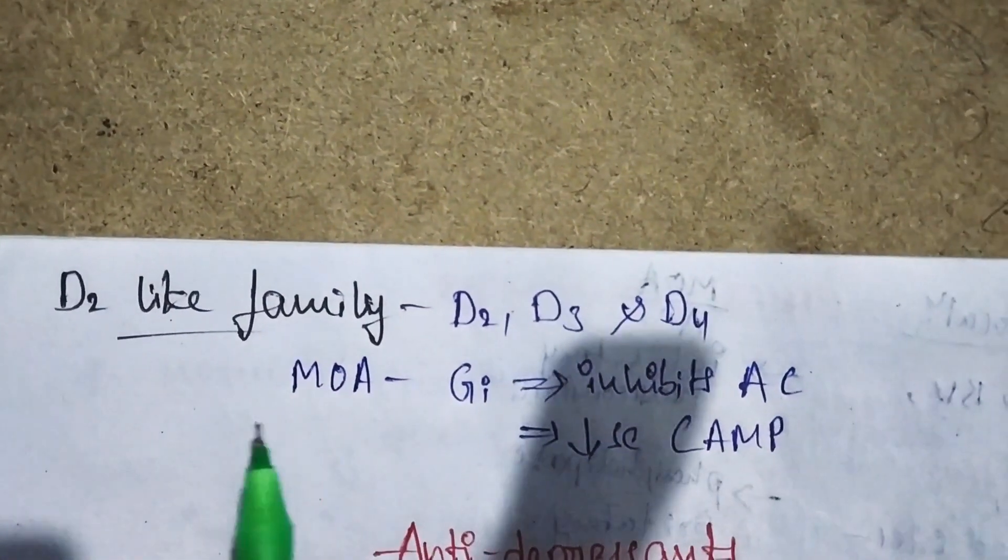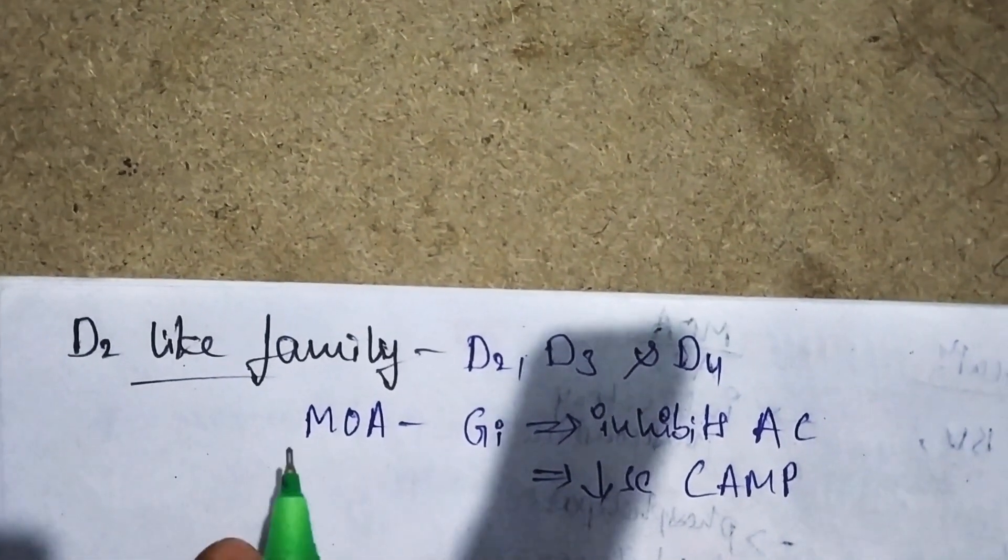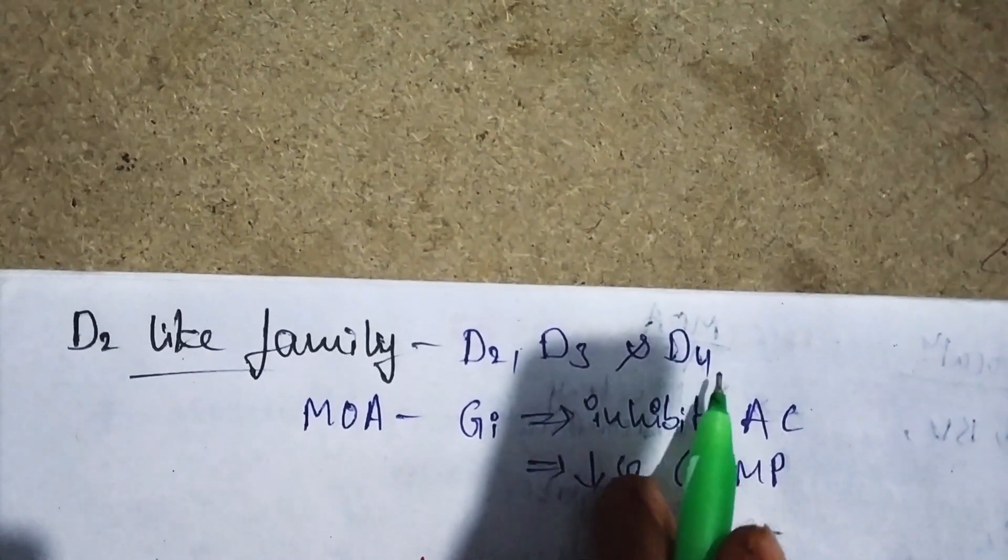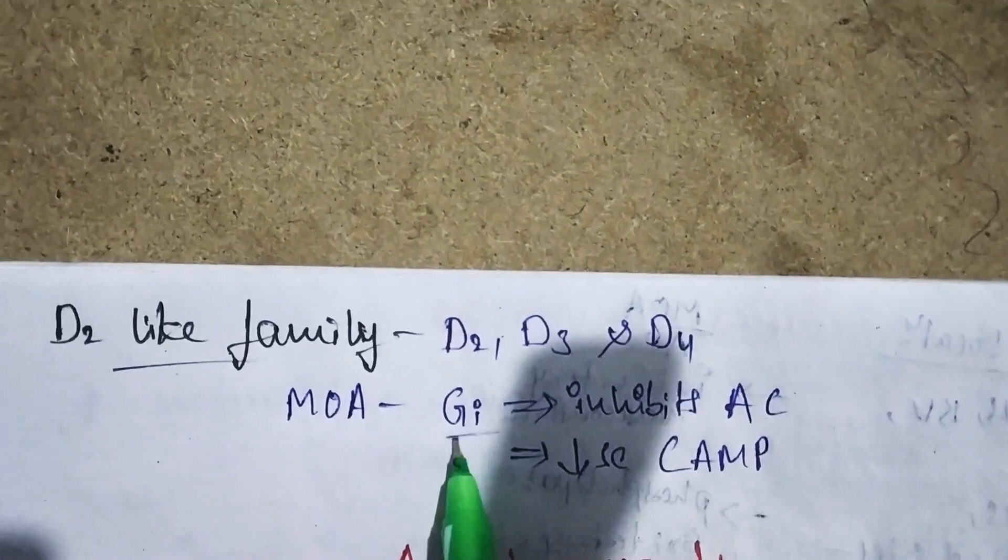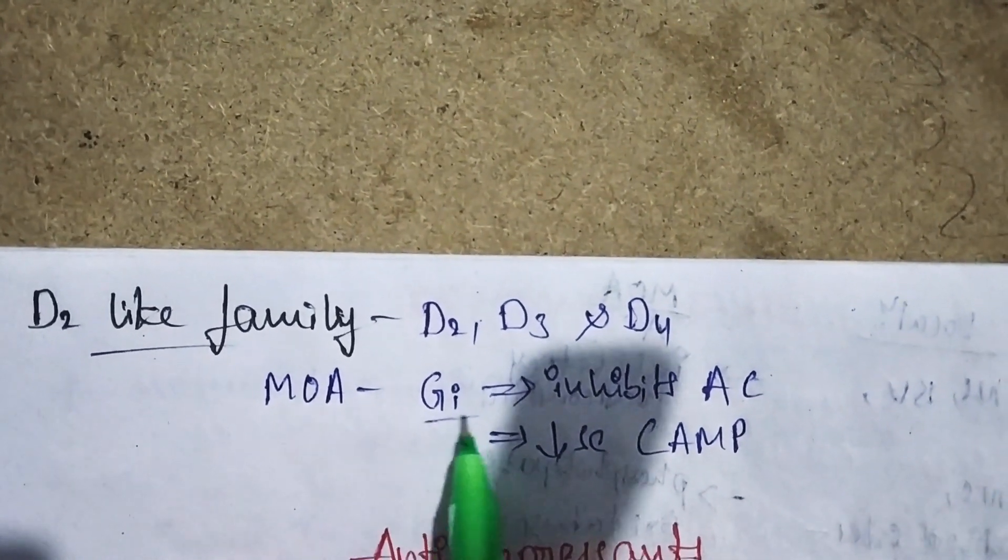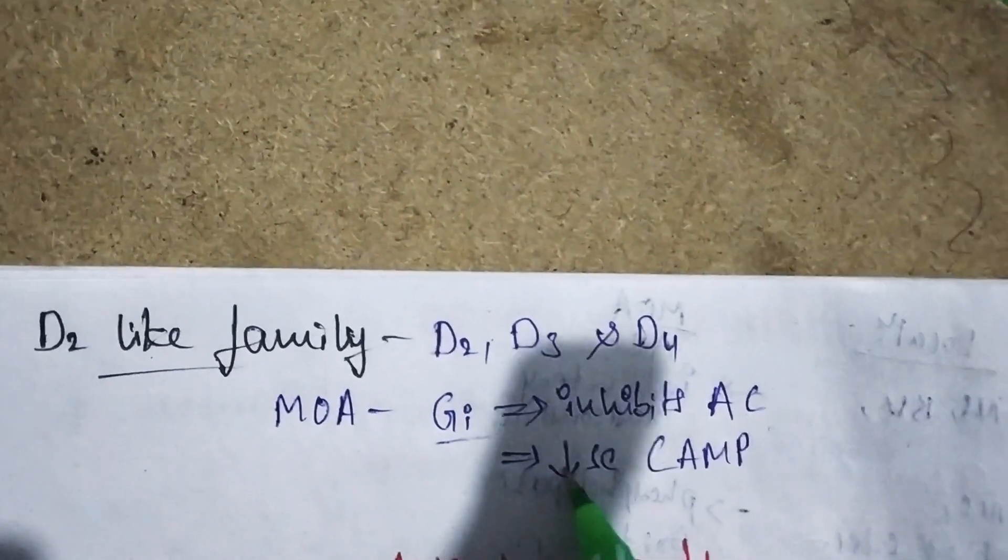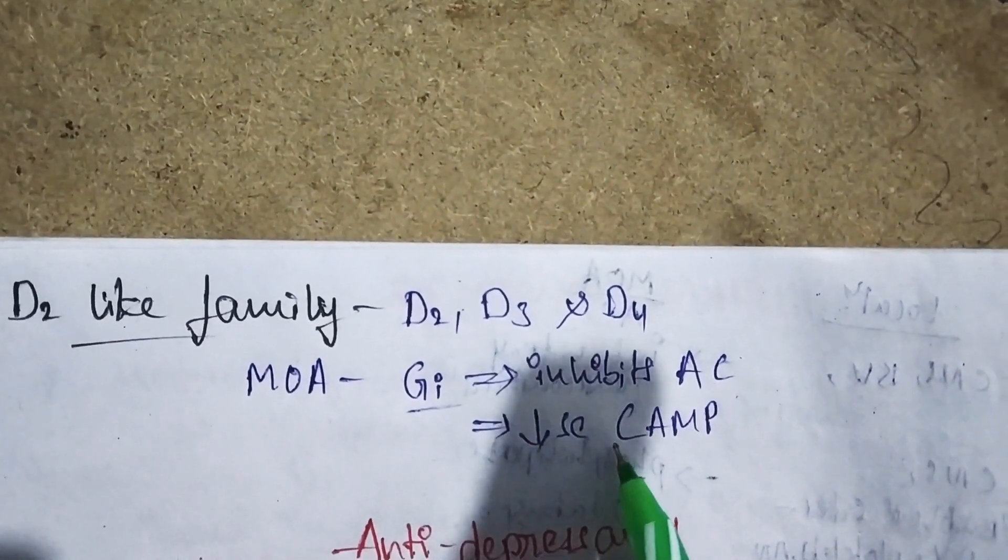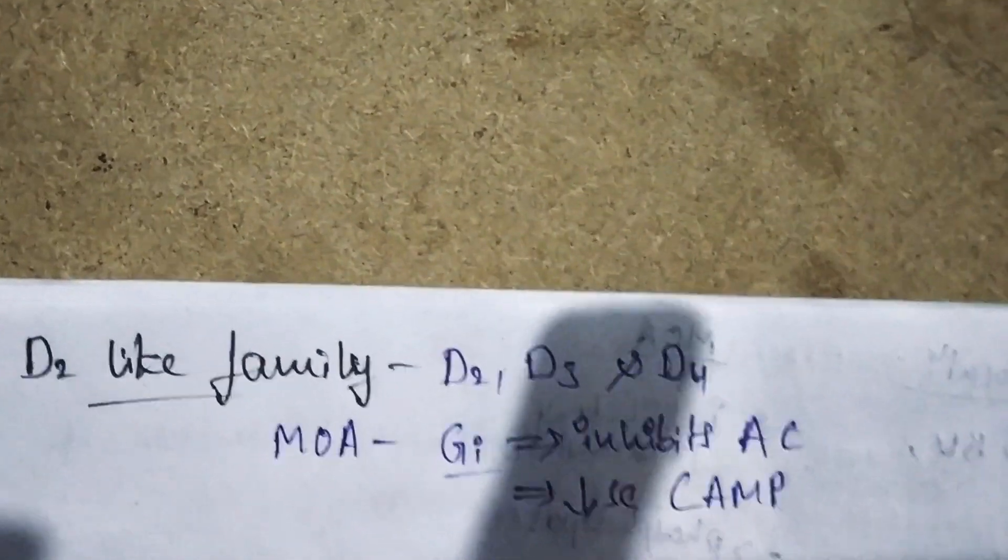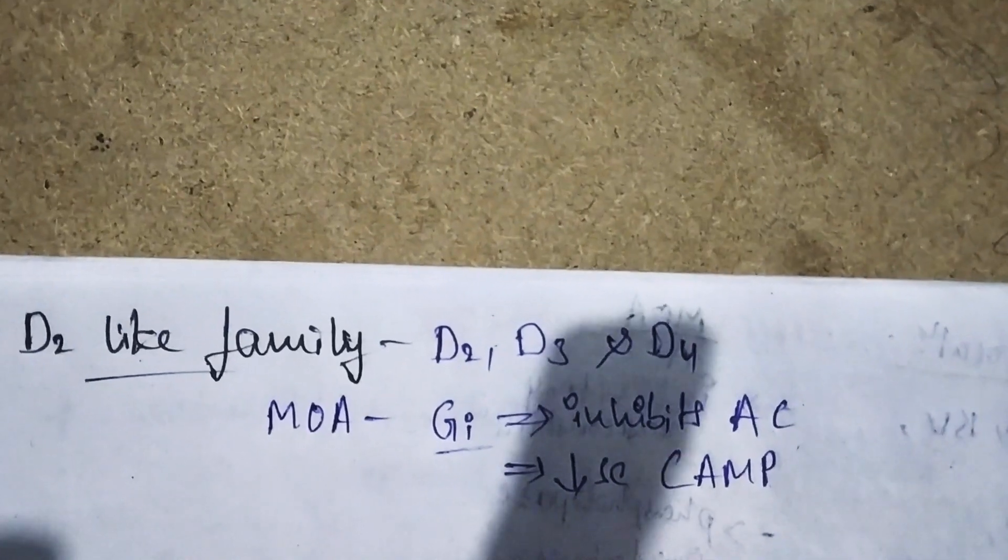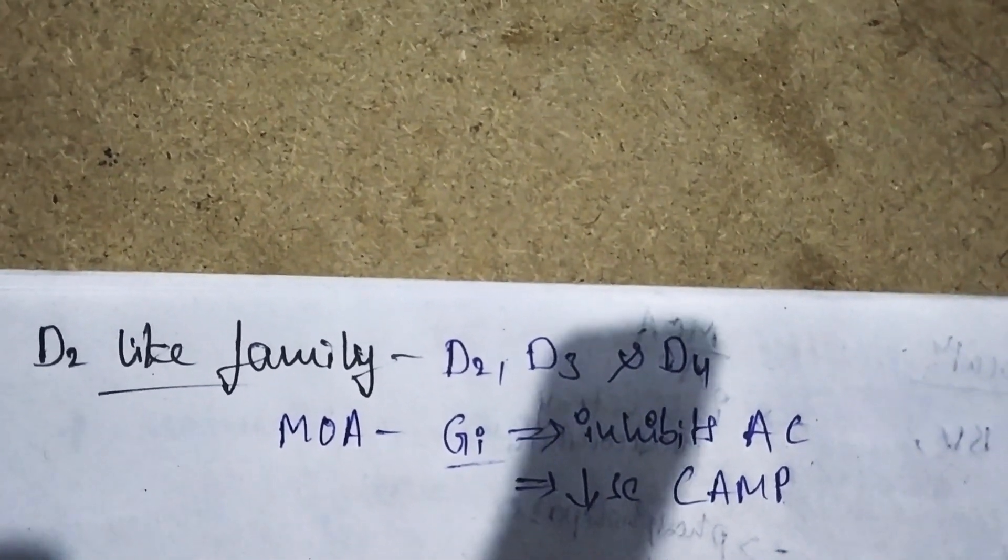The D2-like family includes D1 and D5 in the D1-like family, and D2, D3, and D4 receptors in the D2-like family. The mechanism is Gi-related, meaning inhibitory action that inhibits the adenyl cyclase pathway, decreasing cyclic AMP levels at the junction of the synaptic cleft. This is about neurotransmitters present in the CNS. Thank you.